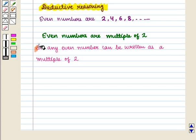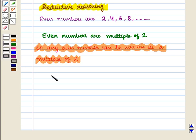So, any even number can be written as a multiple of 2, like 2n where n is a positive integer.